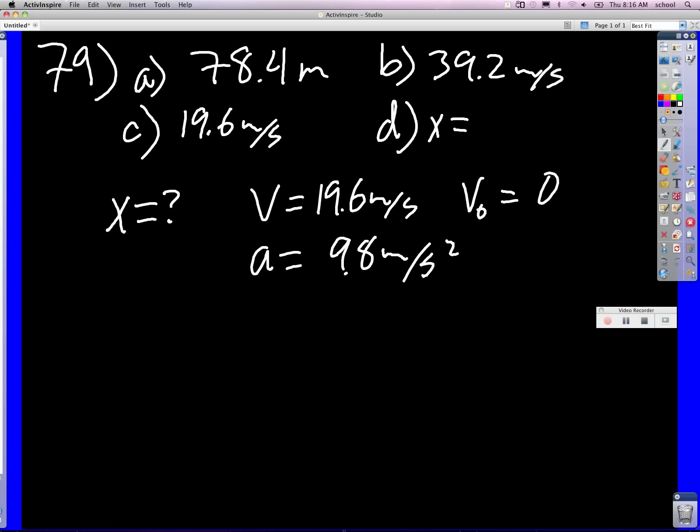I'm going to use v squared is equal to v zero squared plus 2ax. So that's my equation. I do my isolation. I say x is equal to v squared minus v zero squared all over 2a.